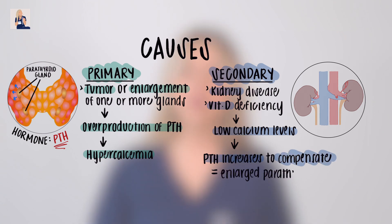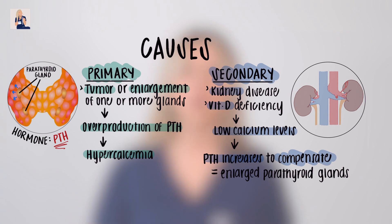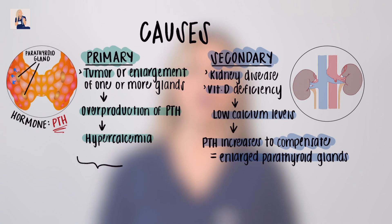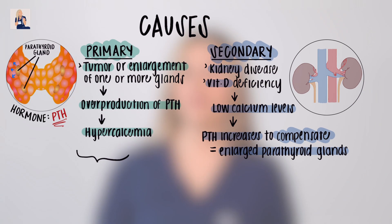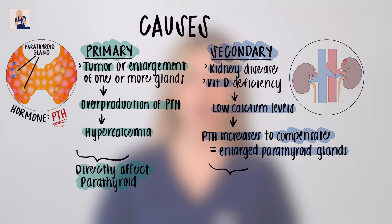Because the parathyroid gland is fighting really hard to compensate, we may see enlargement of the glands from working so hard. Essentially, primary causes are ones that directly affect the parathyroid gland, and secondary causes are ones that stem from another disease unrelated to the parathyroid.